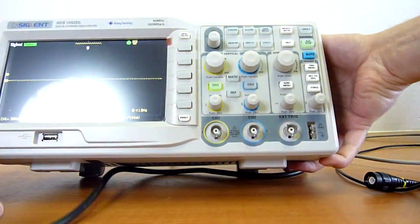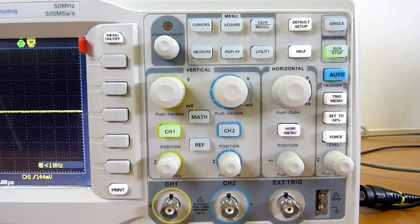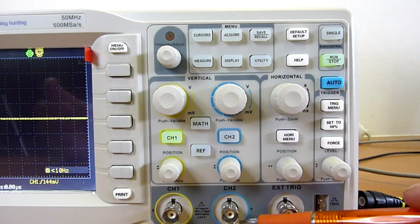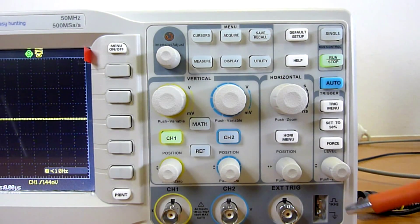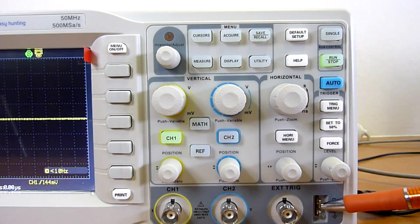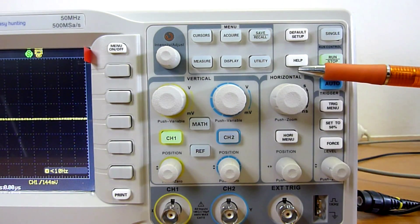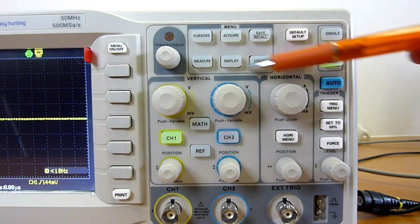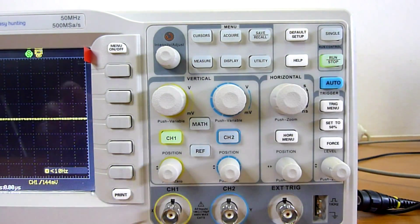But let's focus on the front side more. You can also see two channel inputs. External trigger input. Calibration signal output. Here is a trigger menu. Horizontal menu. Vertical menu for both channels. Setting menu. And some other function buttons.